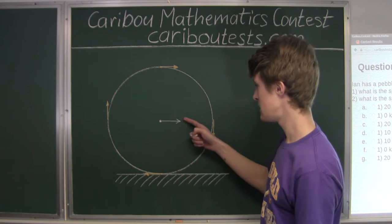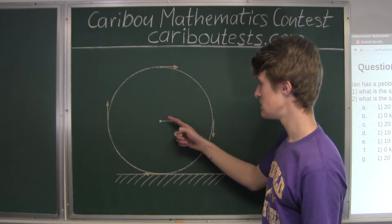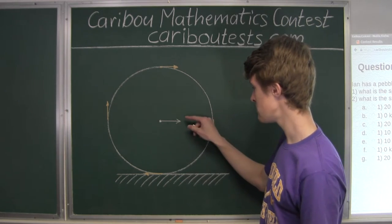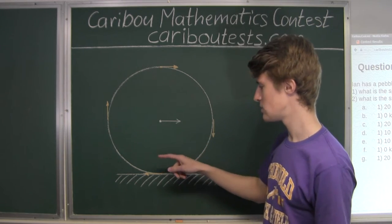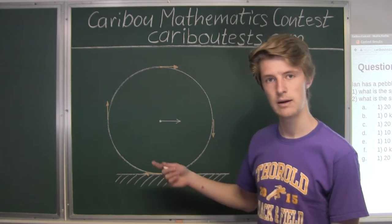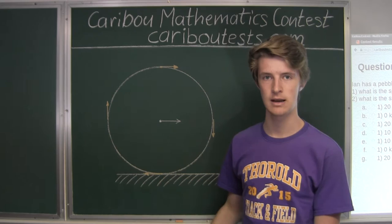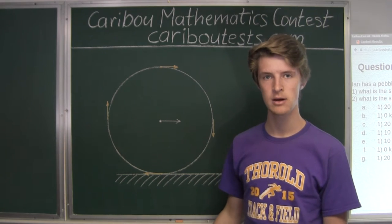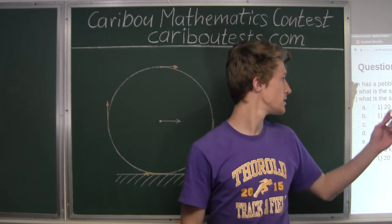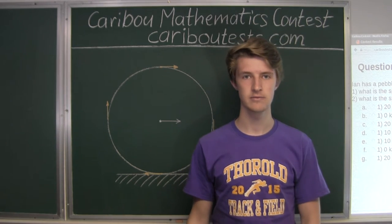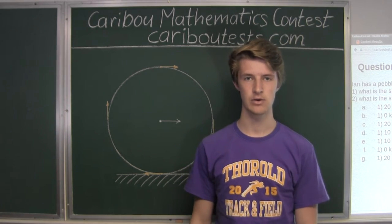This vector here represents the uniform motion of the bike frame in relation to the ground, and we know from the question it is 10 kilometers per hour, as this bike is moving at a constant speed of 10 kilometers per hour.